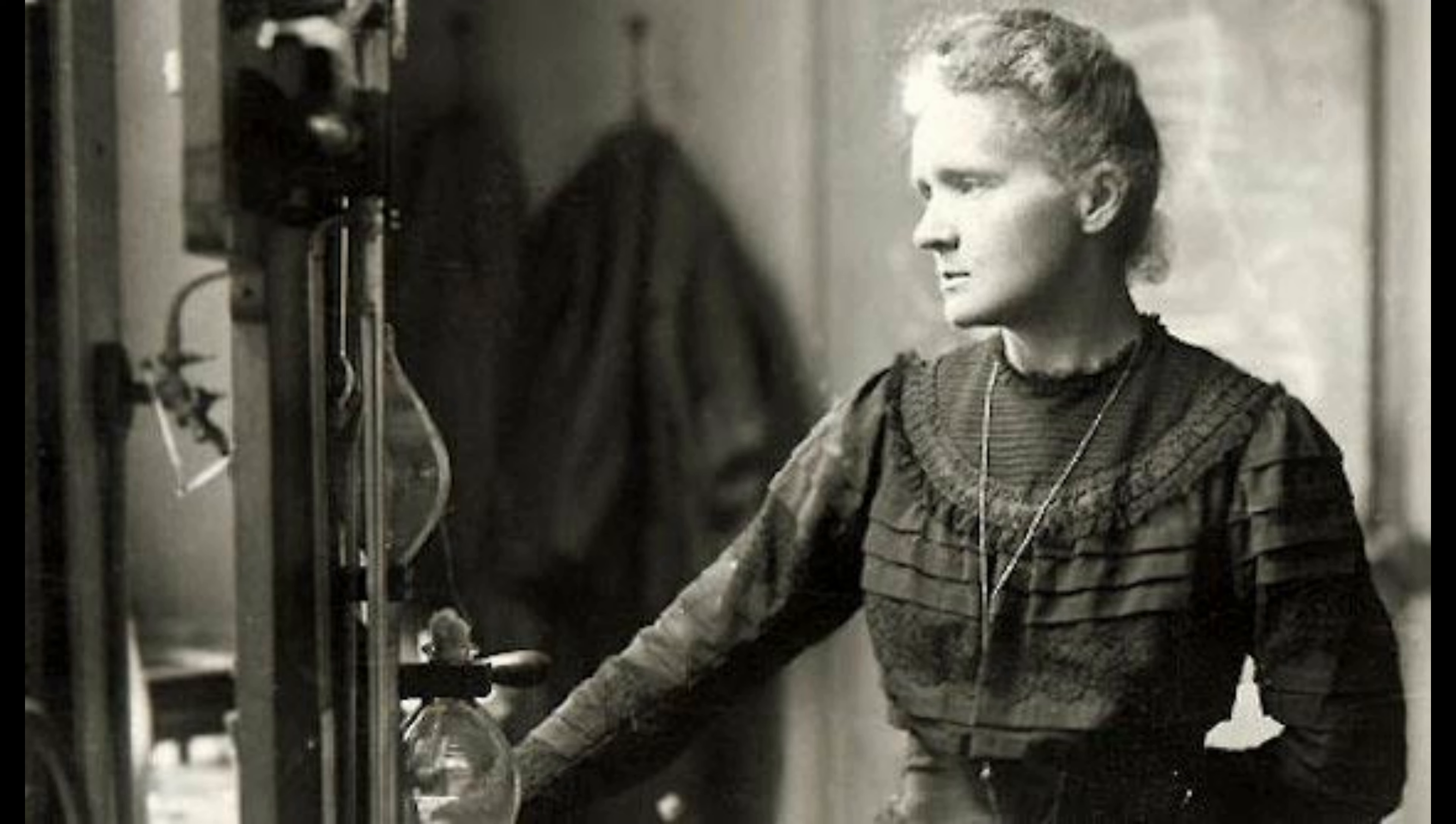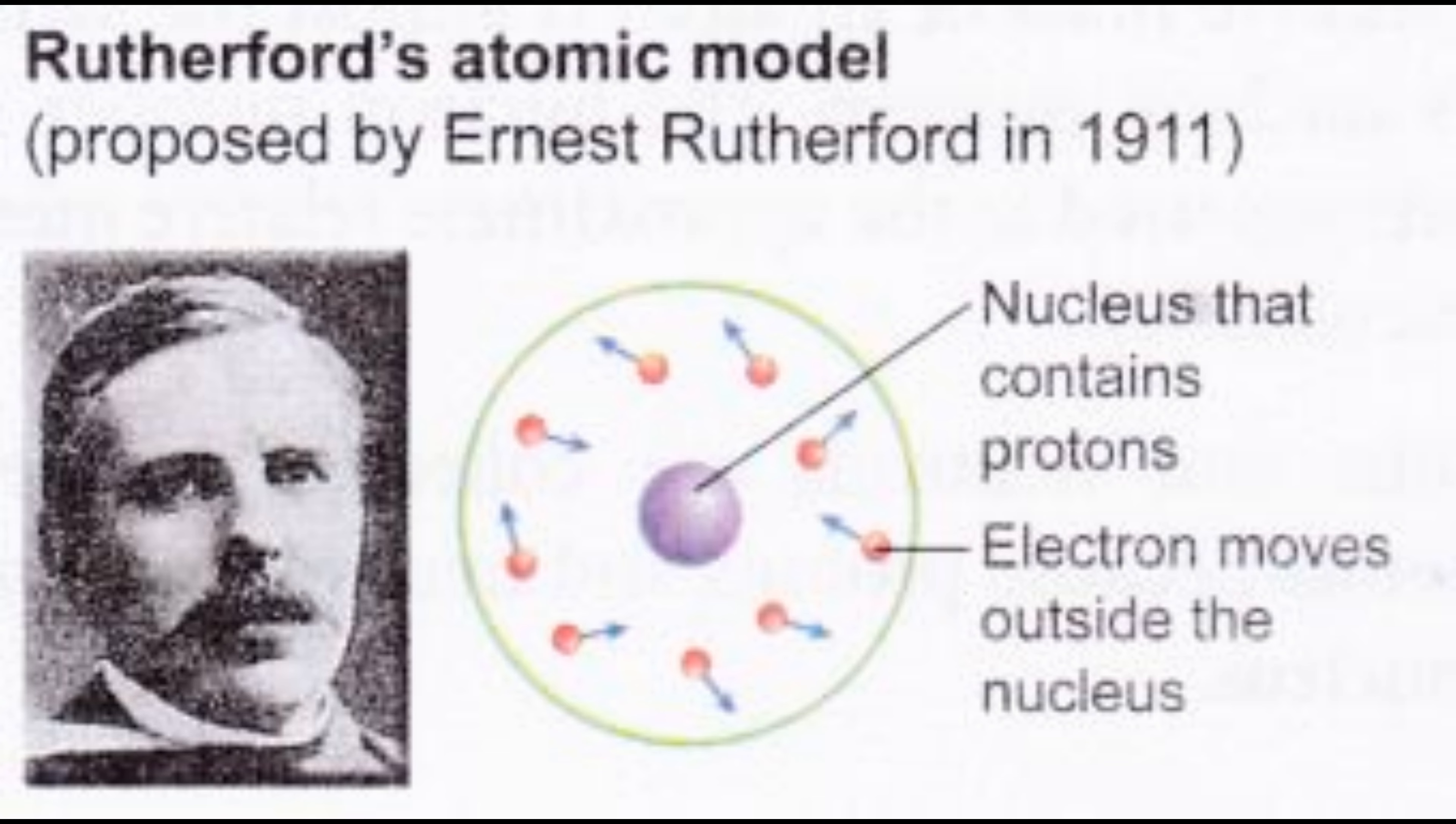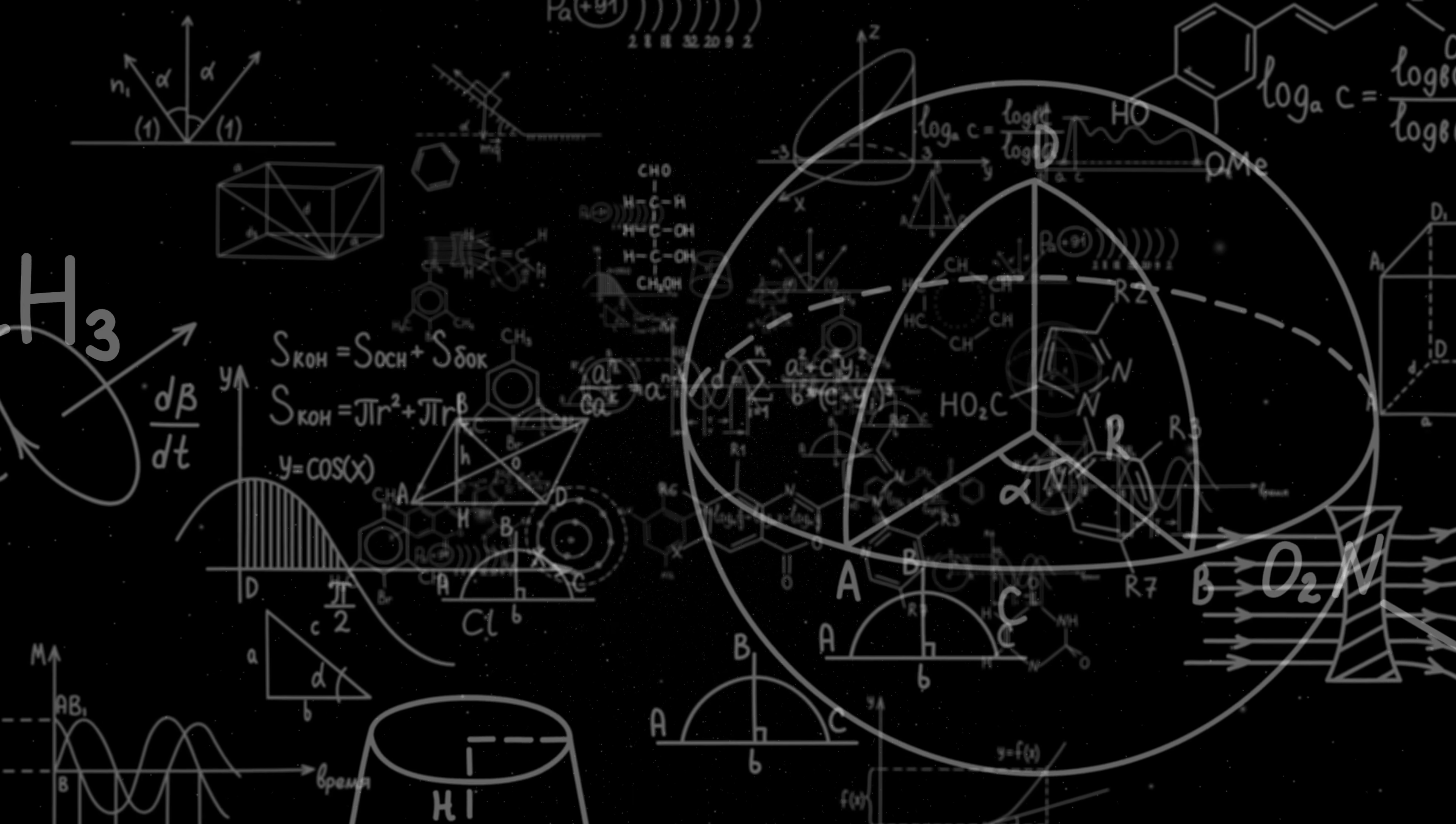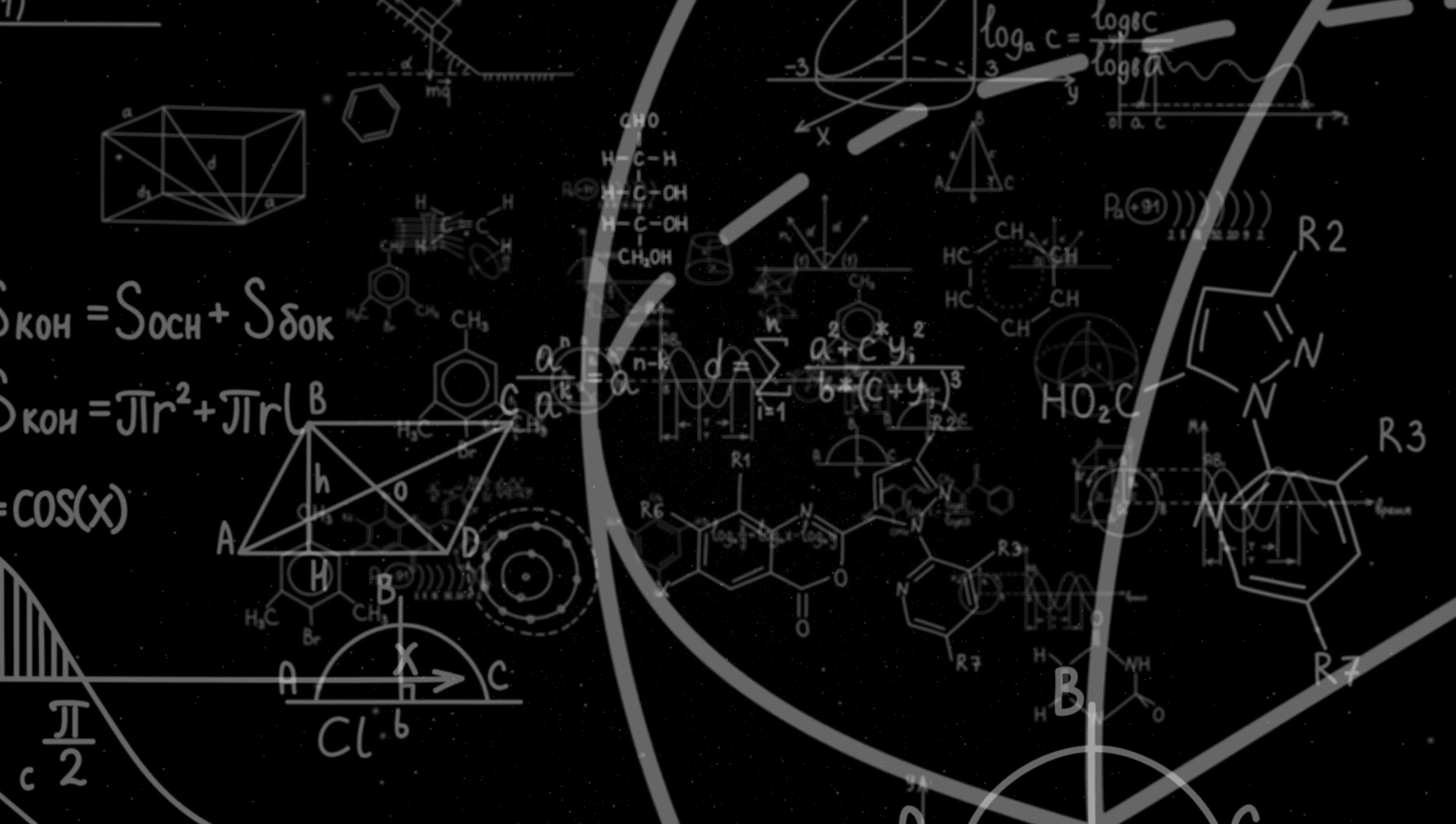In 1899, Becquerel discovered negatively charged particles in the radiations emitted by radioactive substances. In the same year, Rutherford observed positively charged particles in the radiations. In 1900, Pierre Curie also identified charged particles. Hence, it was considered that there are three kinds of radiations emitted by a radioactive element.